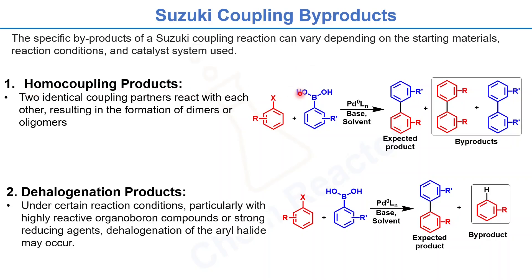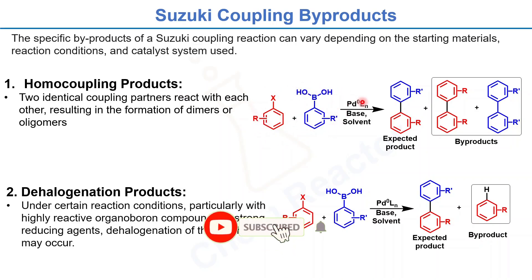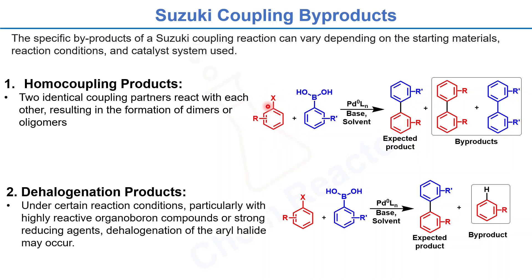First are homo coupling products. Here, aryl halide and aryl boronic acid react in a palladium-catalyzed coupling reaction to form the expected product. But sometimes, depending on your starting materials, two identical starting materials couple with each other and form homo coupling byproducts. These are very common byproducts formed in Suzuki coupling reactions.